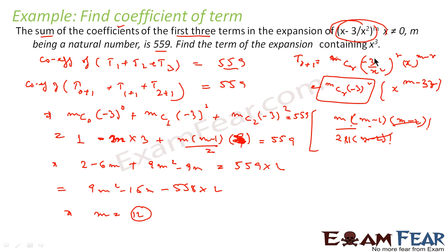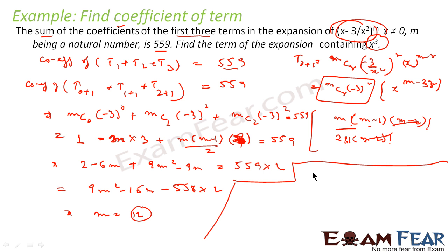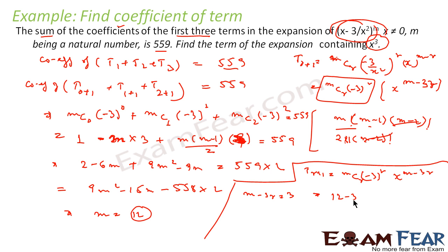Now we have found m = 12. Next, we need to find the term containing x³. We use the formula T(r+1) = mCr · (-3)^r · x^(m-3r). We set m - 3r = 3, and since m = 12, we get 12 - 3r = 3, so 3r = 9, giving r = 3.